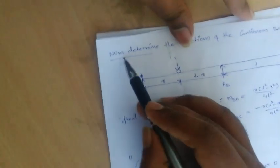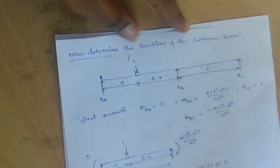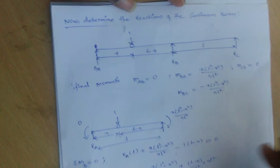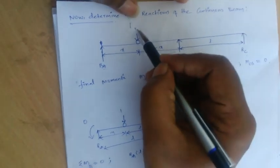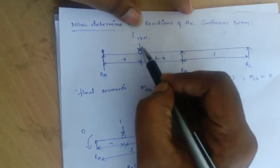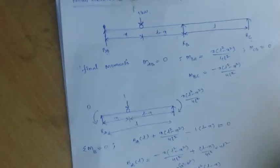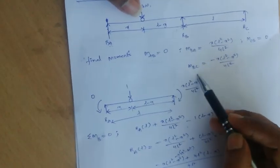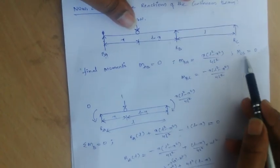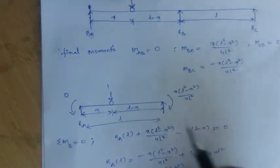Now that all the final moments are determined, we solve for the reactions. Taking R_A, R_B, R_C as the reactions with the 1 kN unit load at distance X from the left, the final moments are: M_AB = 0, M_BA = X(L²−X²)/L², and M_CB = 0.